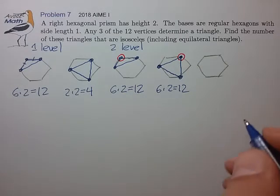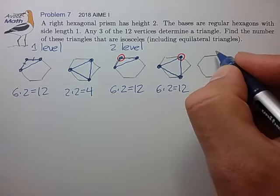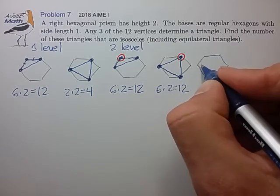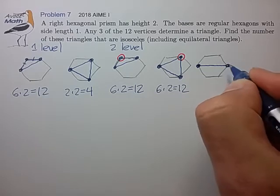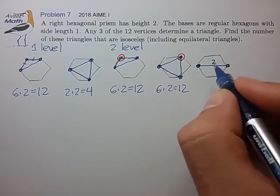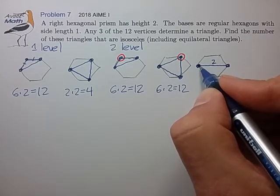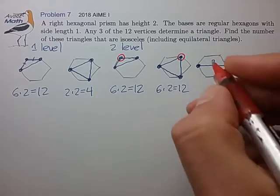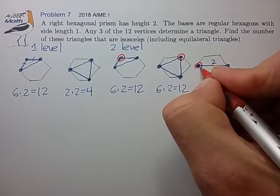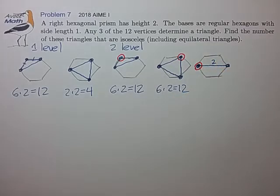Now the last configuration is kind of sneaky. We realize that since the hexagon has side length one, the diameter has length two, and that matches the face-to-face distance. So we can take a third vertex and place it on the opposite face, directly above one of the other vertices, and that creates an isosceles triangle.